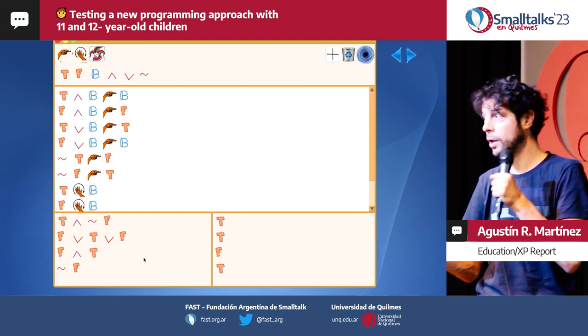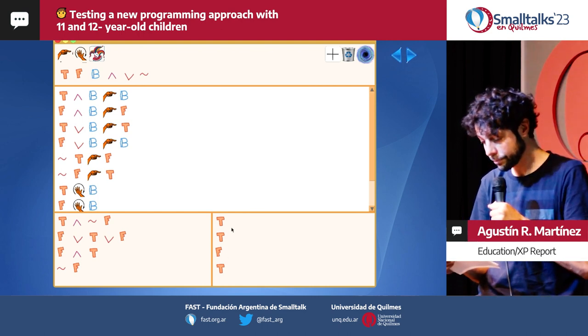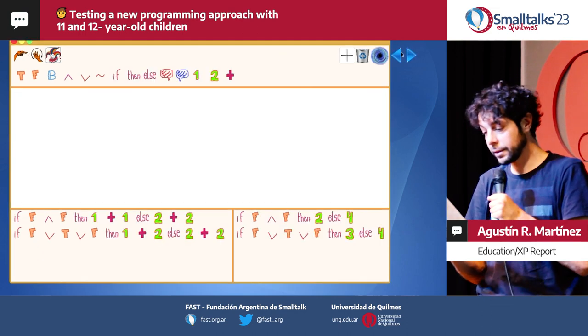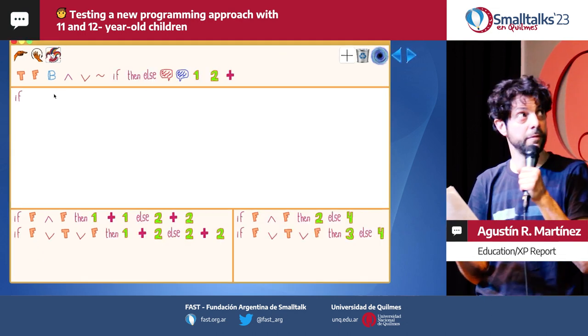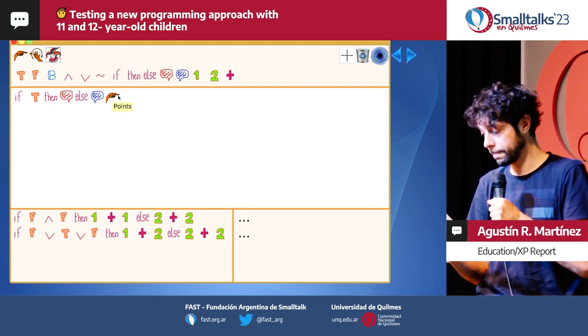Smalltalk is one of them, so you know about that. Syntactic structures like if-then-else can also be visually defined by the user.